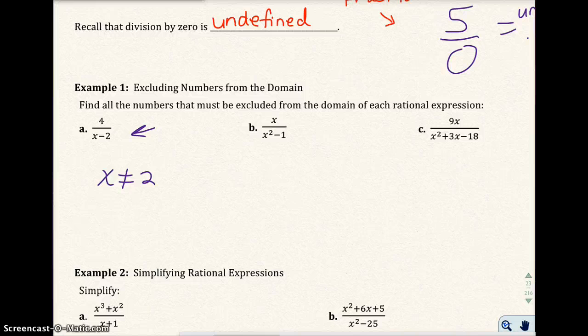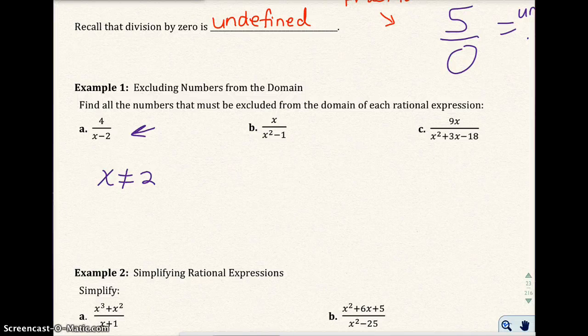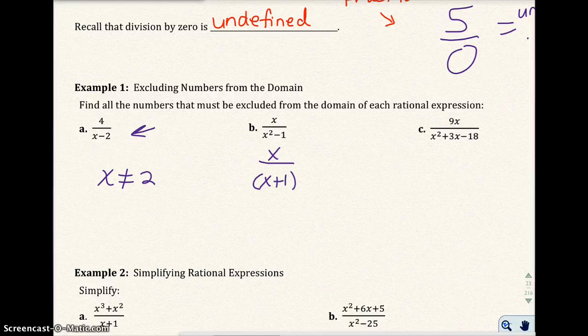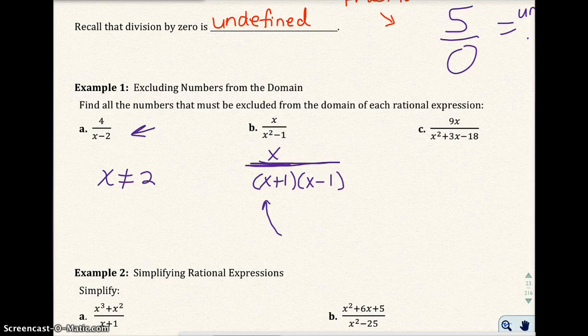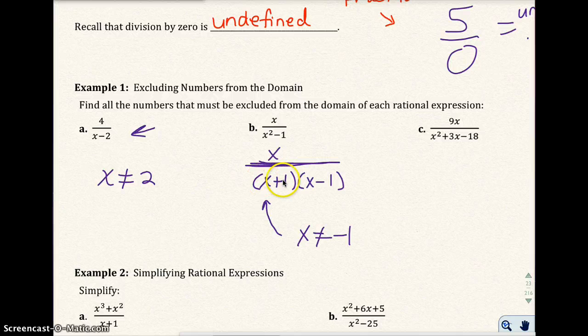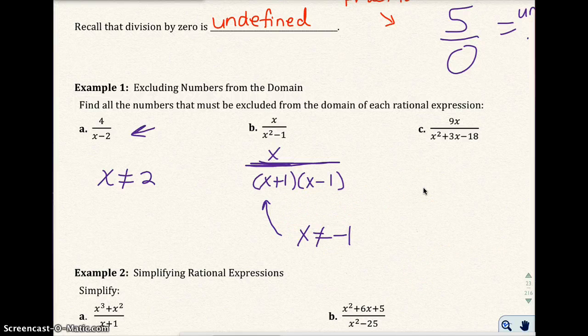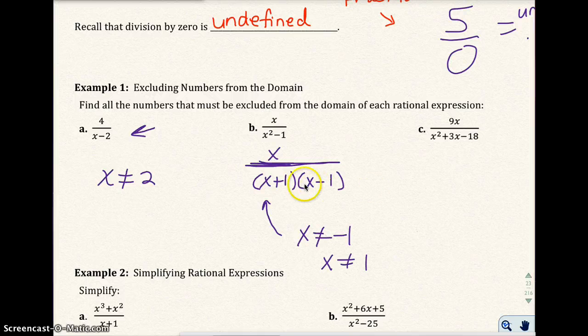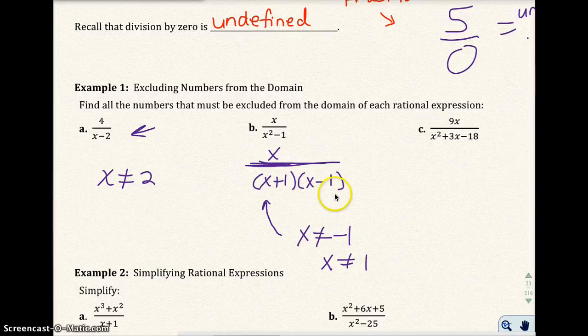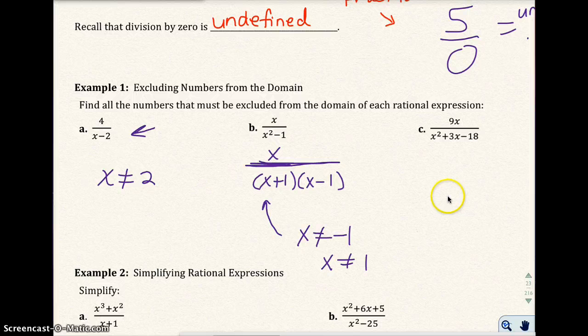In part B, I can't readily see what x cannot be. So if I look at this carefully, I know that I can factor the denominator, and I would get x plus 1, x minus 1. We've got the difference of two squares. So in the denominator, if I had x be negative 1, that would give me negative 1 plus 1, that would equal 0. And 0 times anything is 0. And x cannot be 1 because if I put 1 right here, 1 minus 1 is 0. And 0 times anything is going to be 0. So we don't want 0 in the denominator.